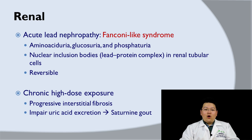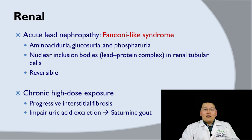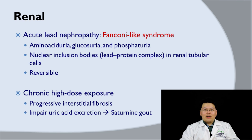For renal manifestation, in acute form lead can cause lead nephropathy in the form of a Fanconi-like syndrome. The patient is going to have aminoaciduria, glucosuria, and phosphaturia. In renal biopsy, you can see nuclear inclusion bodies in renal tubular cells. These findings are reversible if the patient is treated and stops the exposure. In chronic form, lead can cause progressive interstitial fibrosis and impair uric acid excretion, causing patients to have gouty attacks called saturine gout.